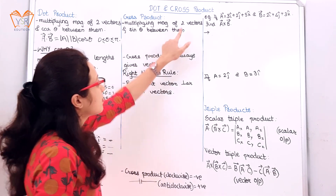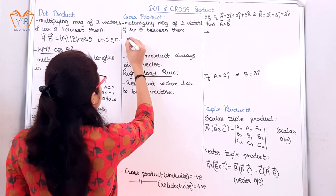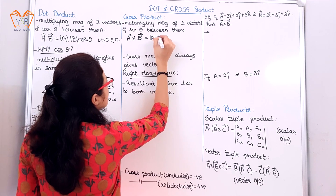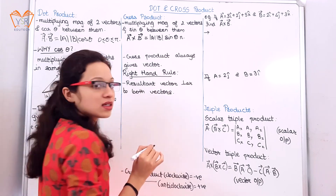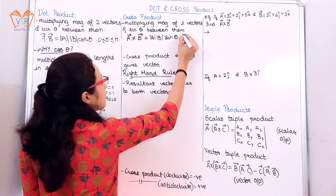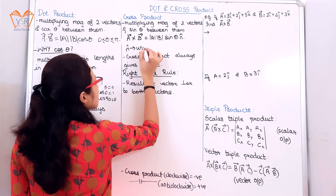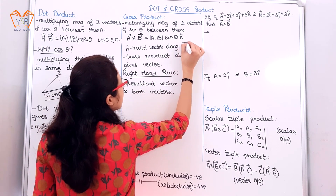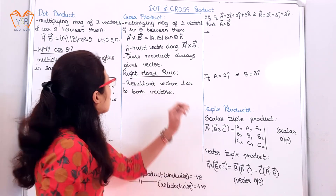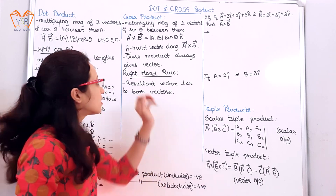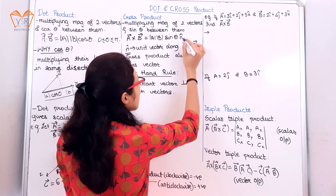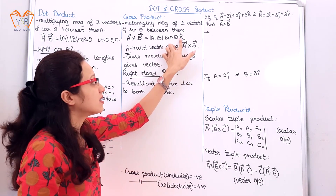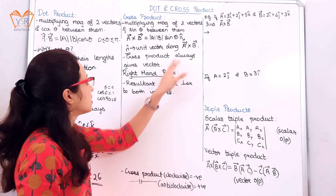Moving on to cross product: it is multiplying the magnitudes of two vectors and the sine of theta between them. It is denoted as a⃗ × b⃗ = |a||b|sinθ · n̂. This n̂ is a unit vector along the resultant vector a⃗ × b⃗. Because of this unit vector giving direction, we say cross product always gives a vector as output — magnitude and direction is nothing but a vector.